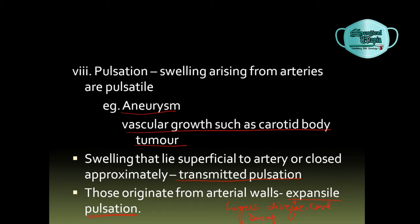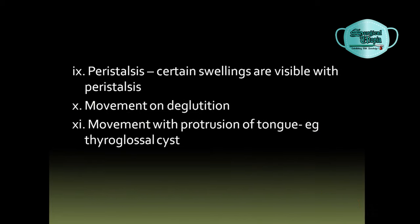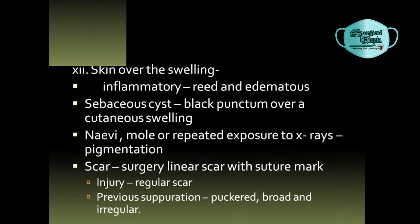To distinguish transmitted from expansile pulsation: in transmitted pulsation, when you place two fingers on the swelling, both fingers are elevated in the same direction. In expansile pulsation, both fingers are pushed in different directions — they diverge away from the swelling. In transmitted pulsation, the pulsation disappears when the swelling is moved away from the artery; in expansile pulsation it does not, as the swelling originates from the arterial wall. Certain swellings show movement with peristalsis or on deglutition, such as thyroglossal cyst.